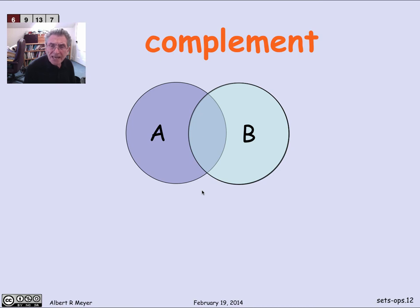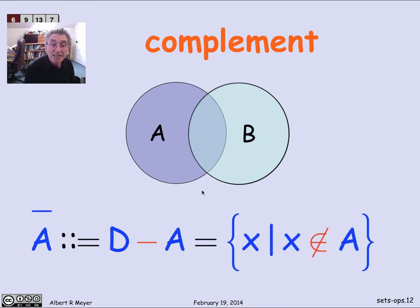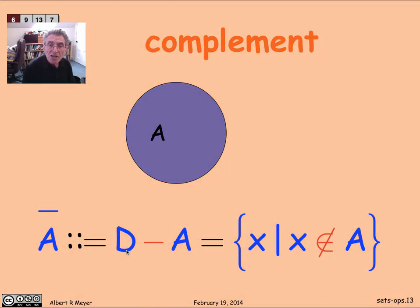And a special case of the minus operation, of the difference operation, is complement. When you know the overall domain that you expect all your sets to be part of, then you can define A complement to be everything that's not in A, the set of x such that x is not in A, where x is understood to be ranging over some domain of discourse. So if we're going to picture that, we're looking at the whole orange region, all of the stuff that's not in A if we think of the whole slide as representing the domain of discourse D.